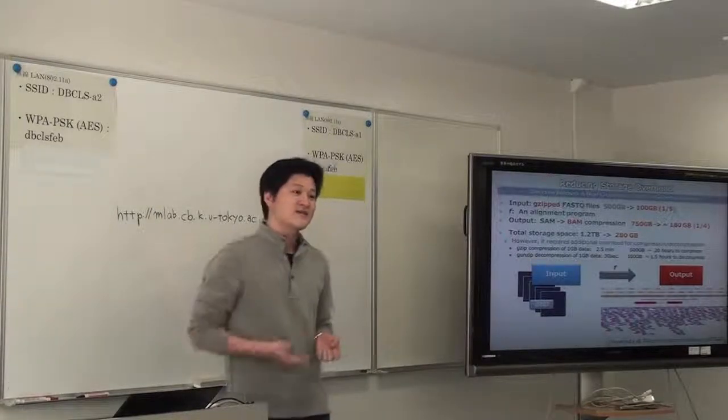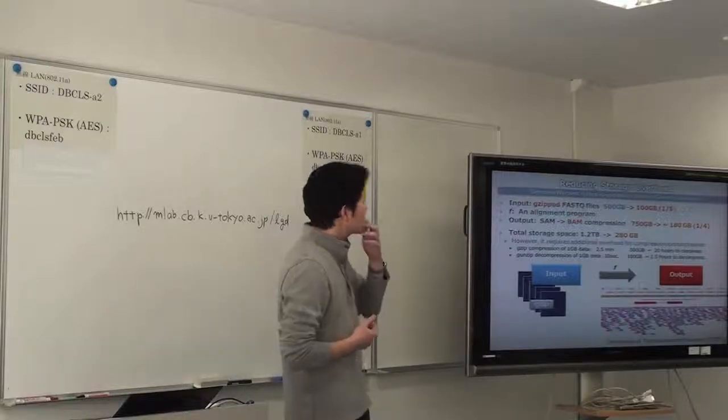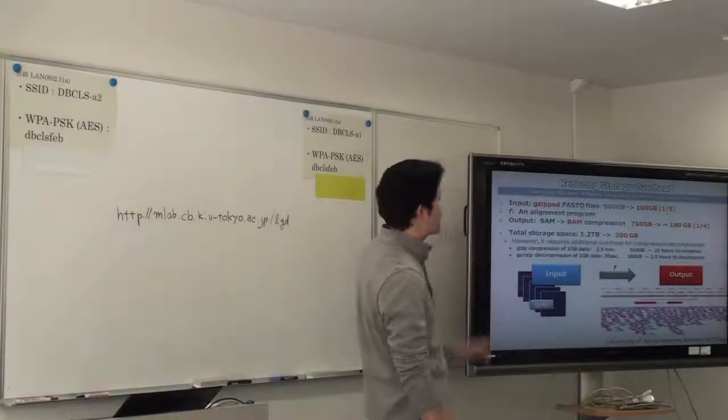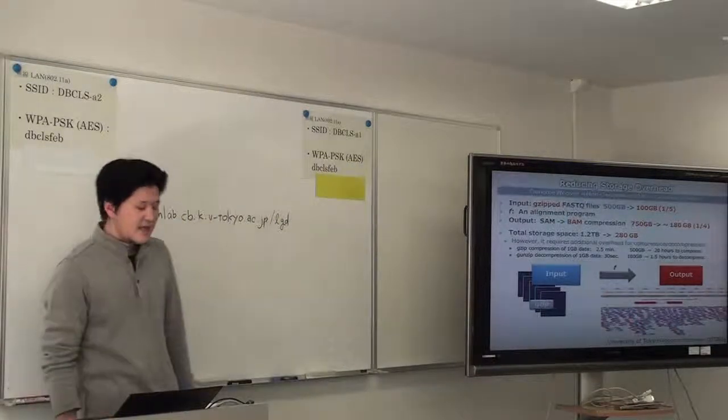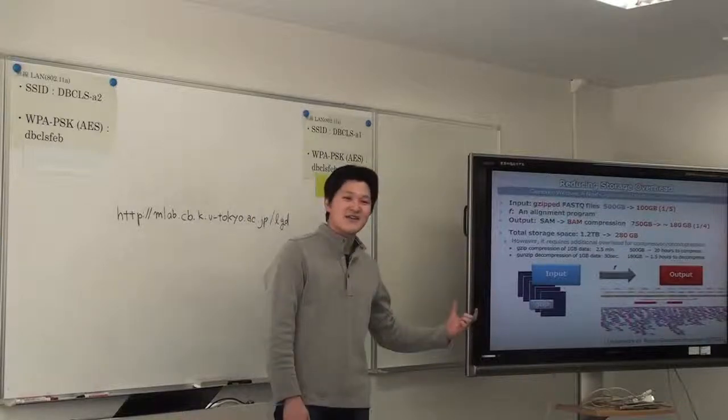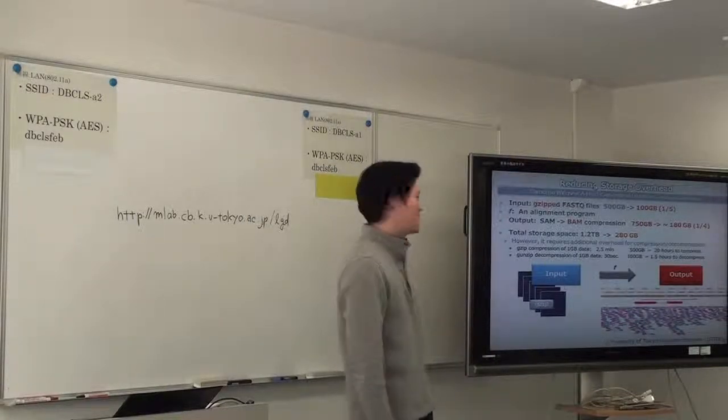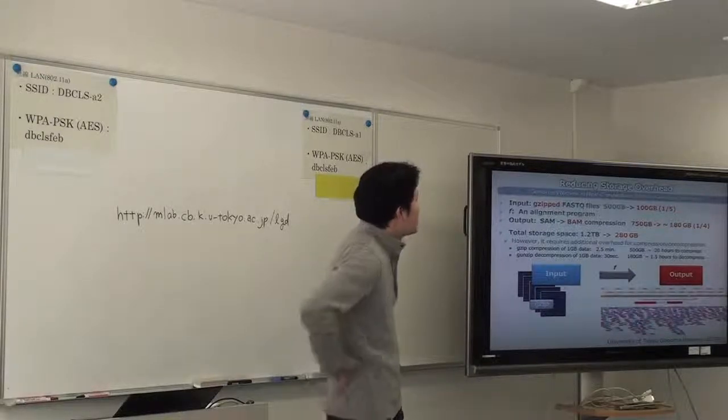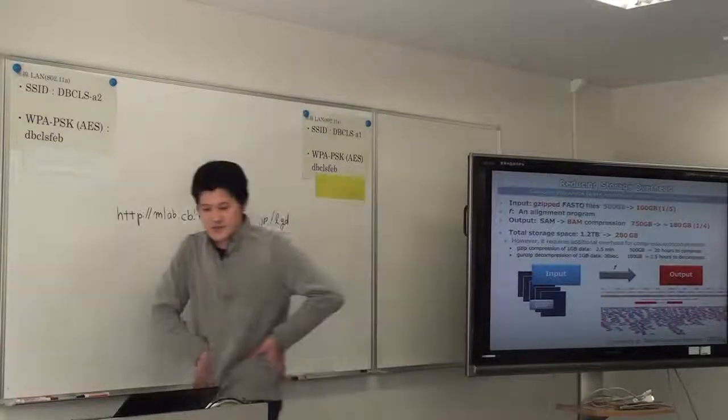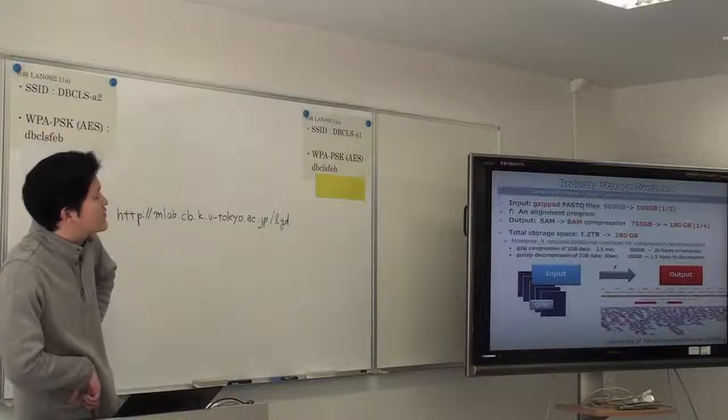A simple strategy is applying compression. For example, using gzip. So if we apply gzip to the FASTQ files, the size of the data will be 1/5 of the original input. So 500GB of data will be 100GB. And also, the output also can be reduced. The SAM format, SAM format is a de facto standard for describing alignment information. SAM format has a binary format called BAM. It's a binary SAM format. And applying BAM compression, 750GB of data can be 180GB. Almost 1/4 size. So total storage space required dropped from 1.2TB to 280GB.